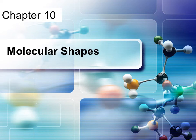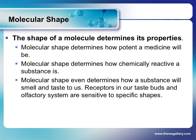This is the first lecture from chapter 10. This lecture will describe how we determine the shape of molecules. The shape of a molecule is actually really important. If you've taken biology, you've learned about active sites and enzymes and how certain molecules have to fit precisely into an active site in order to complete a process. So the shape is really important.